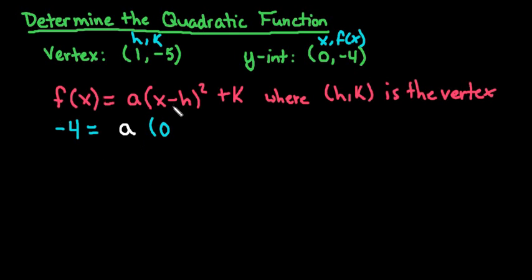And then I'm going to plug in my h and my k. Remember that I'm always subtracting on this one, so I'm going to do 0 minus 1 squared. And my k, because it's plus k, I would add negative 5, or I can just say minus 5.